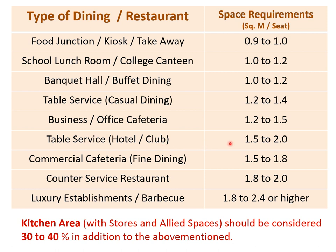Table serving in hotels and clubs requires a more spacious ambiance: 1.5 to 2.0 m² per seat. For fine dining restaurants, 1.5 to 1.8 m² per seat is required. For counter service restaurants, 1.8 to 2.0 m² per seat. For luxury establishments or barbecues, 1.8 to 2.4 m² per seat or higher. Kitchen area with store and allied spaces for workers should be considered as 30 to 40% of the dining hall size in addition to the above standards.